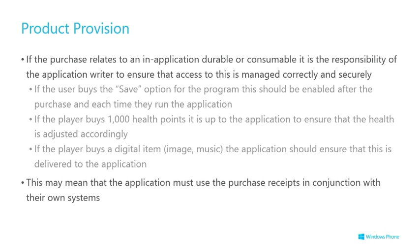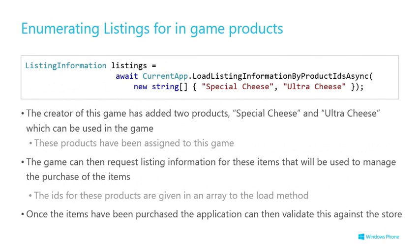Fulfillment is the process of making sure that your customers get the goods they purchased — typically as soon as the purchase has been verified. You get a digital receipt, and when fulfilling durables through your servers, you should always send that receipt along with your user ID to help fulfill the actual delivery of the content. This is how you can enumerate the listings for in-app purchases — in this case looking for ones with specific product IDs. The app can then verify whether the user has already purchased the items by checking against its own data, which may be implemented locally or more likely on a server. For those that the user can purchase, you can display details on screen using data from the listing information object.